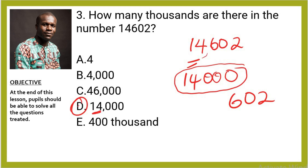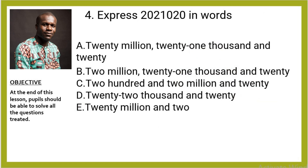Question 4: Express 2,021,020 in words. This looks large, so what you do is group from right to left in threes — 1,2,3 put a comma, 1,2,3 put a comma. The reason for grouping is to make it easier to read. So this is two million, twenty-one thousand and twenty. The right option is B.